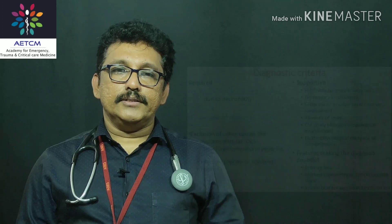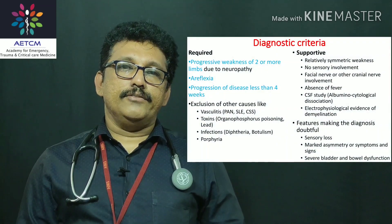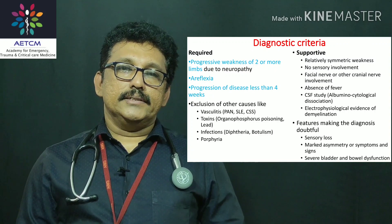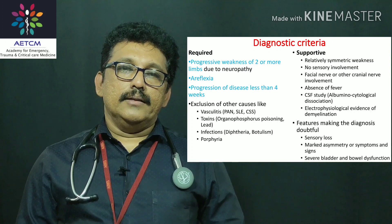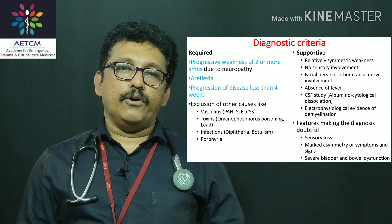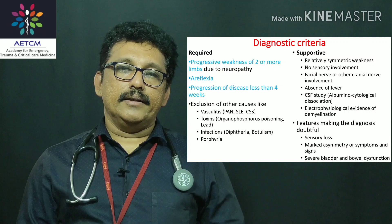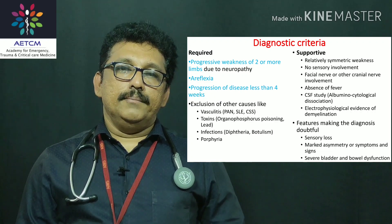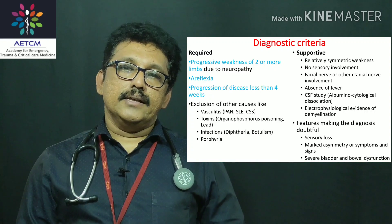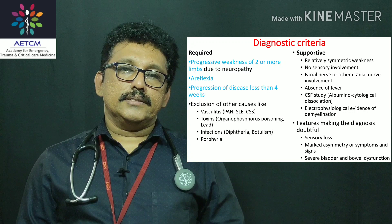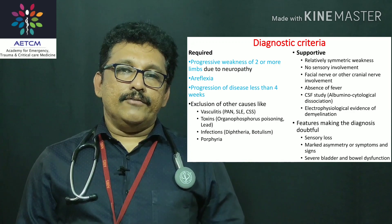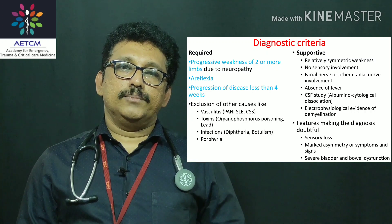The required diagnostic criteria for GBS are: progressive weakness of two or more limbs due to polyneuropathy, absent deep tendon reflexes, and progression of disease within less than four weeks. If progression exceeds four weeks, it is called CIDP — chronic inflammatory demyelinating polyneuropathy. GBS is AIDP — acute inflammatory demyelinating polyneuropathy. Conditions to rule out include vasculitis, toxins like organophosphate poisoning, and infectious causes like diphtheria, botulism, and porphyria.